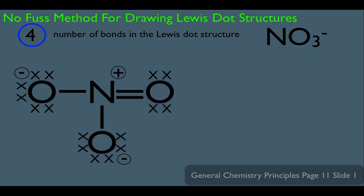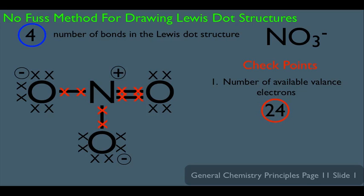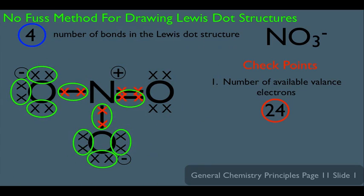Just in case this appears on a test, there are two checkpoints to verify you got the right structure. Checkpoint one is the number of available valence electrons — we calculated 24 in step one. Count all the lone pair electrons and bonding electrons in your structure. If they add up to 24, your Lewis dot structure is correct.